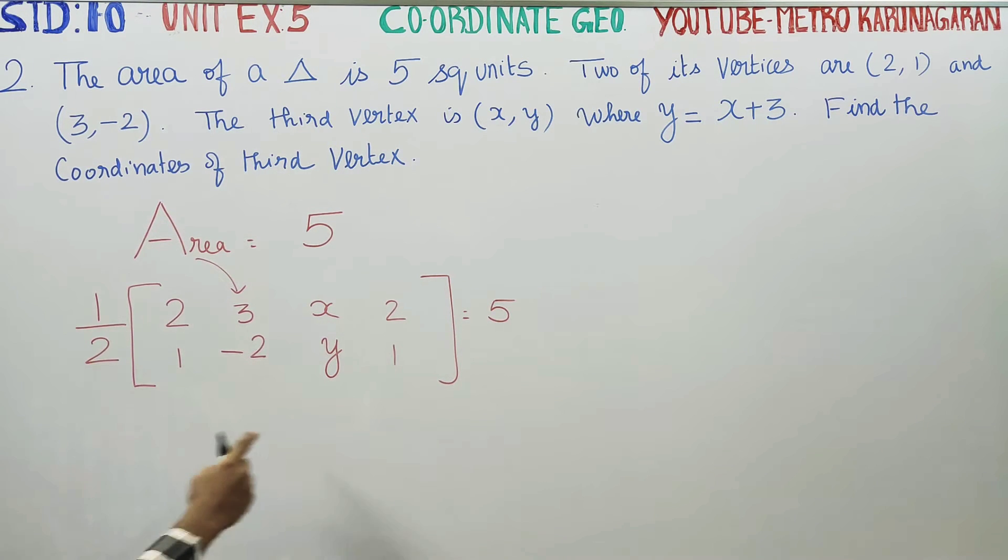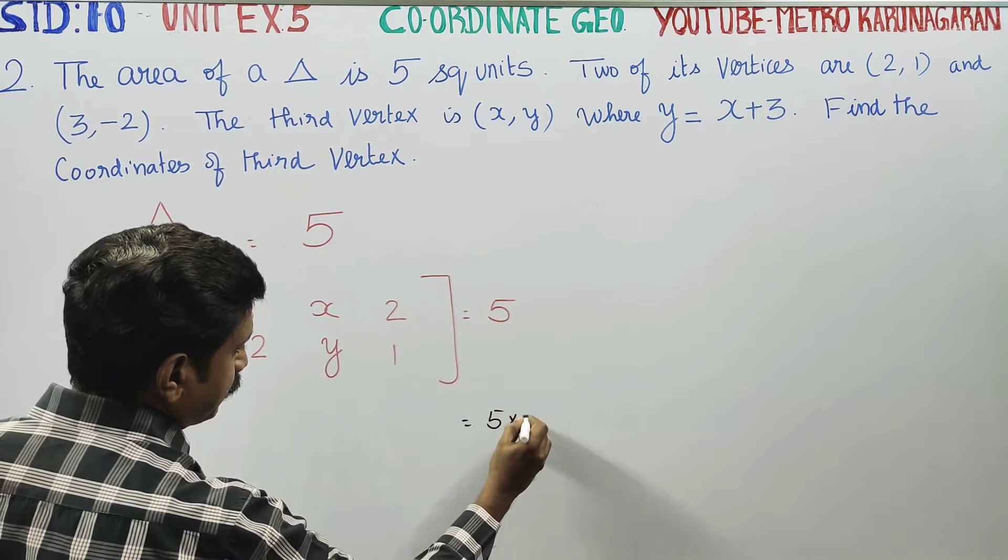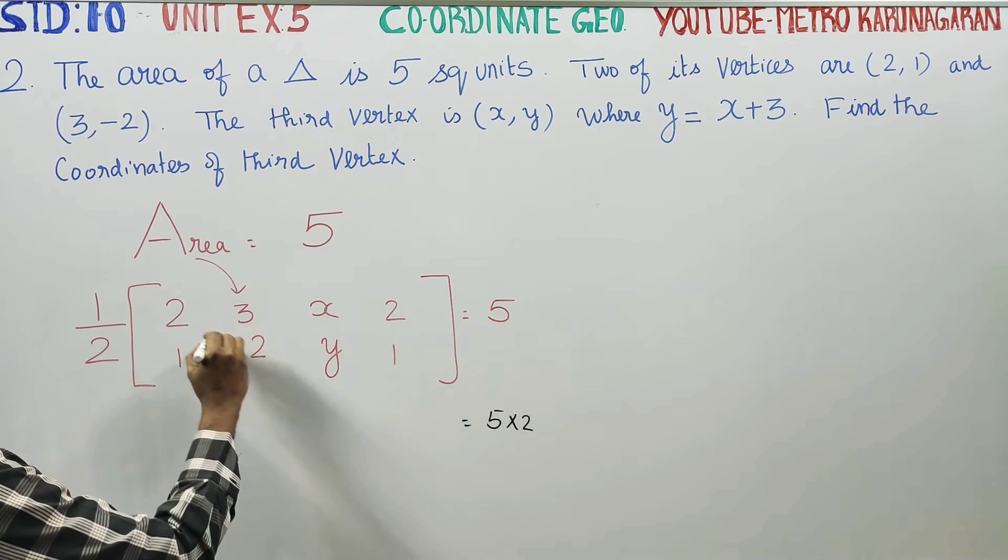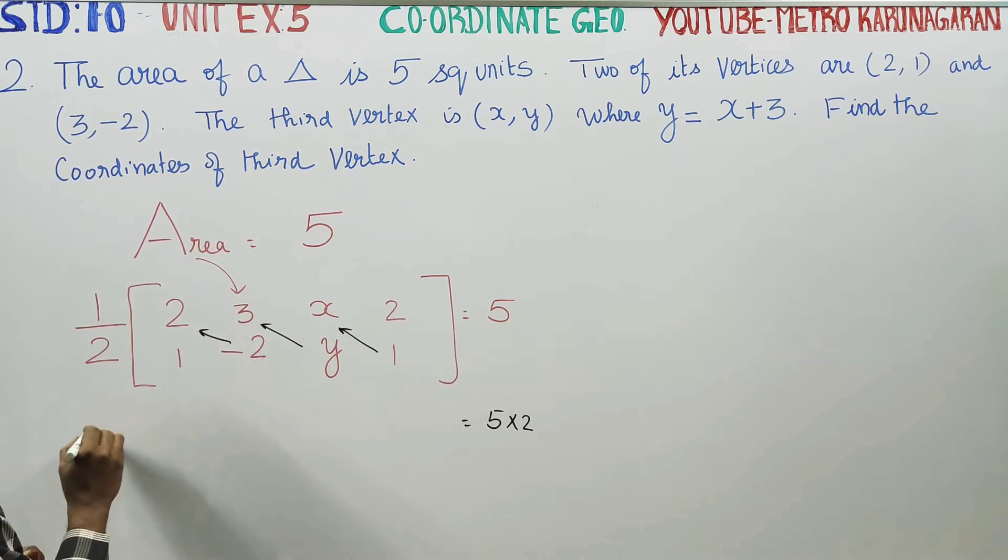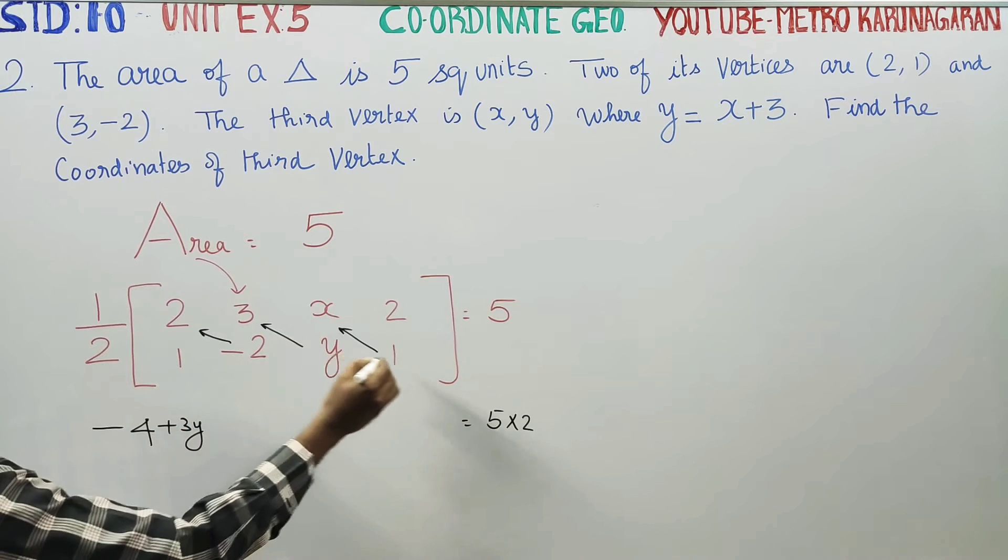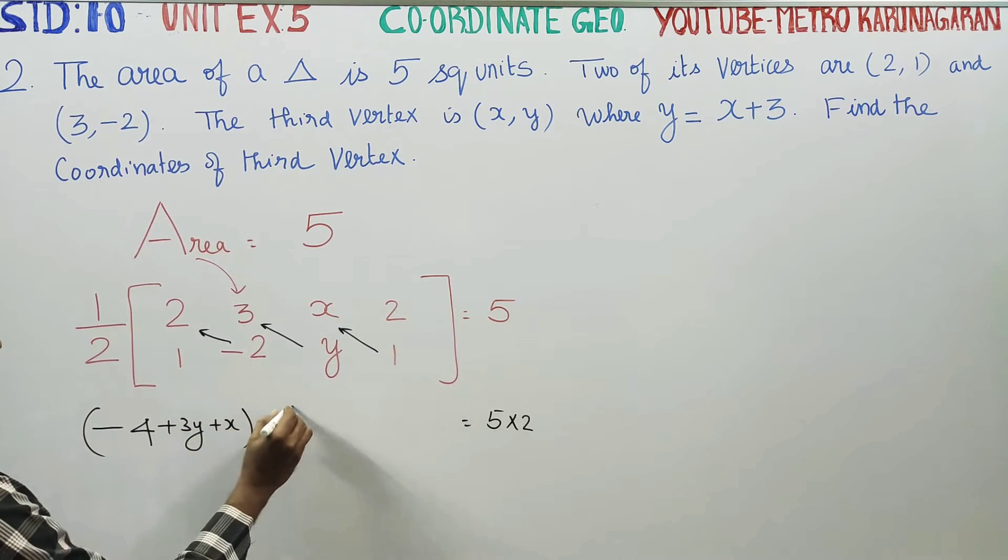We'll multiply 2 on both sides. Right-hand side minus left-hand side. First, right multiply: 2 into -2 is -4, 3 into y is 3y, 1 into x is x.